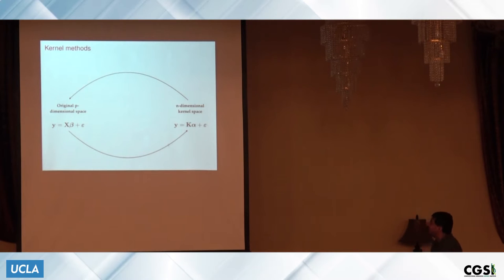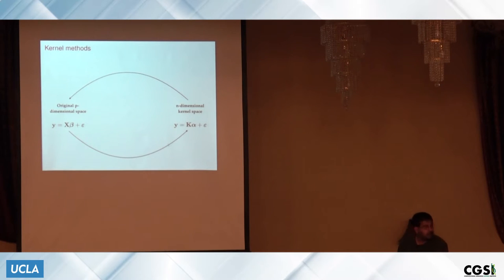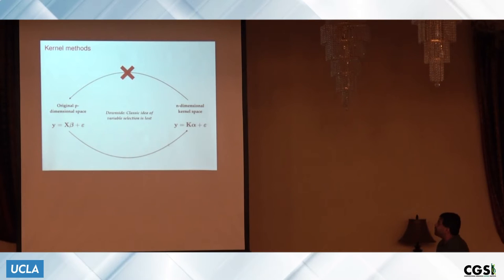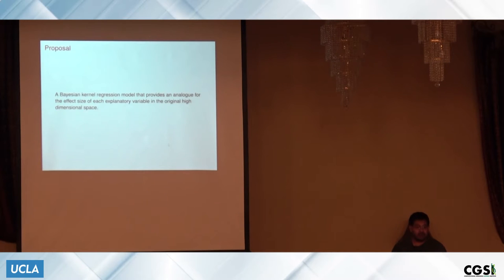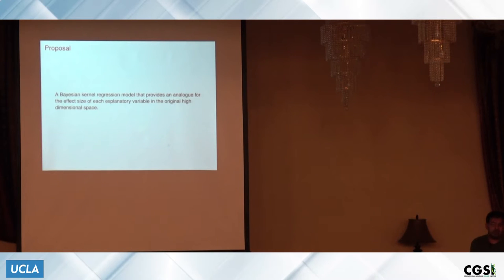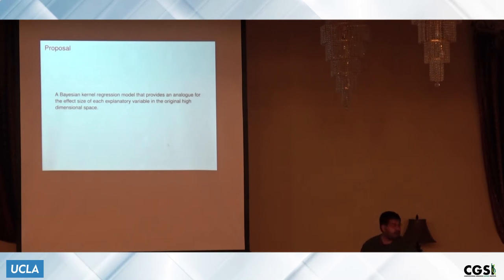Kernel methods let you take this original p-dimensional regression and turn it into a nonlinear regression problem — but it's linear in the kernel matrix. The problem is that the notion of an effect or variable selection is lost because you're working in this n-dimensional coordinate space. So the question is: can we come back and figure out which feature was most relevant? We're going to put together a Bayesian kernel model that does this — defining the notion of an effect size for nonlinear models.